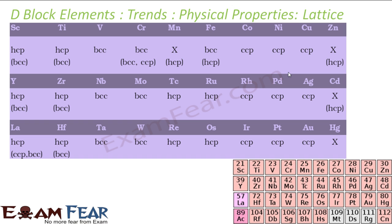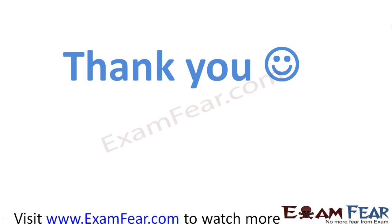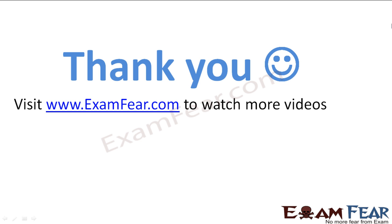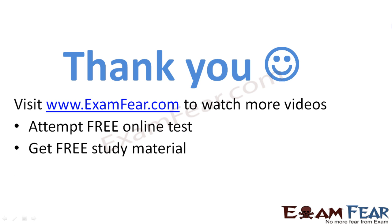This diagram shows the lattice structures for different d-block elements. For example, vanadium and chromium are BCC, iron is also BCC, and cobalt is CCP. You can pause the video to study the lattice structures. Thank you — visit examfear.com to watch more videos, attempt free online tests, get study materials, find tutors and mentors, and much more.